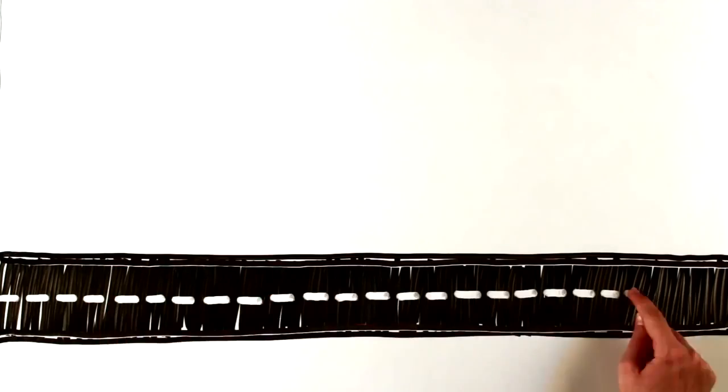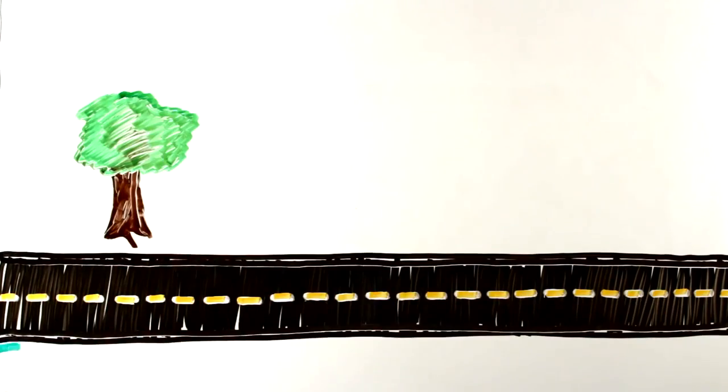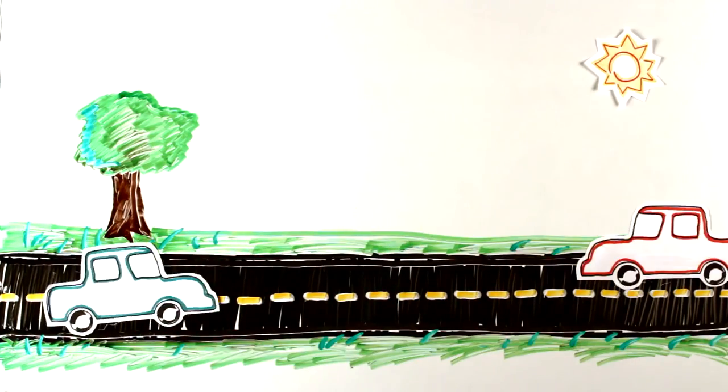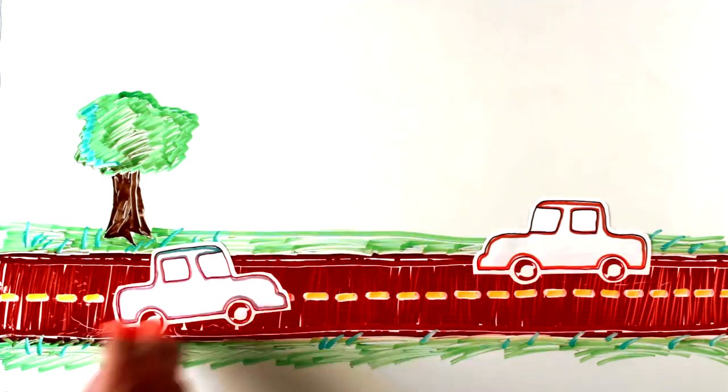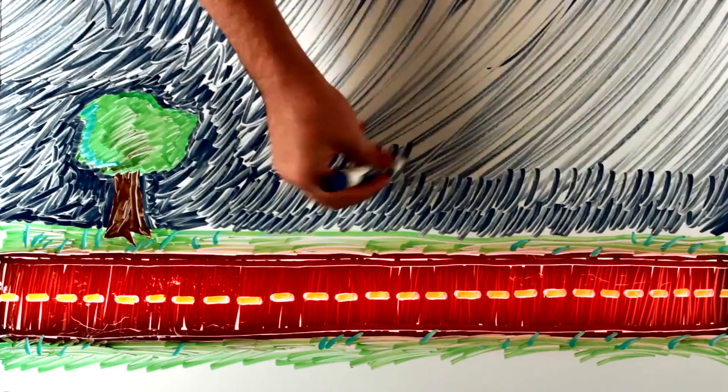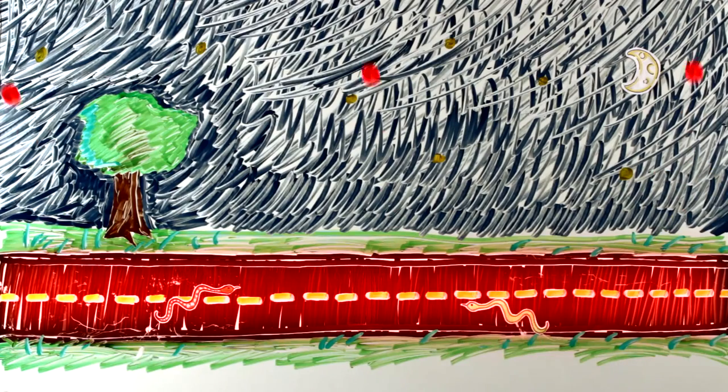An example of absorption and radiation happens on an asphalt road throughout a 24-hour day. During the day, the asphalt warms up as it absorbs sunshine. Then, at night, the surface radiates that warmth as it cools.